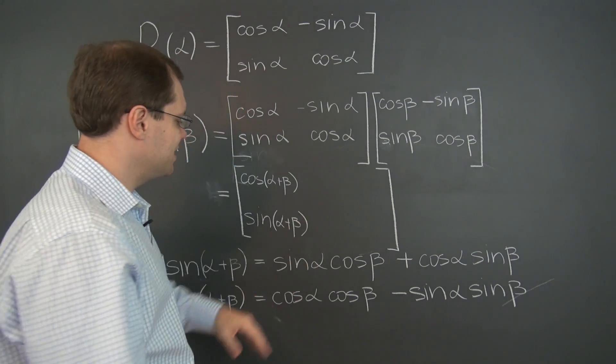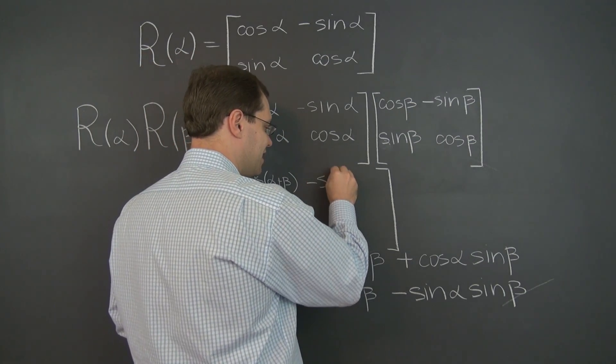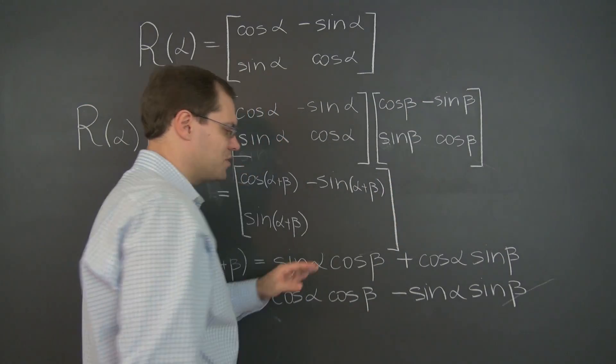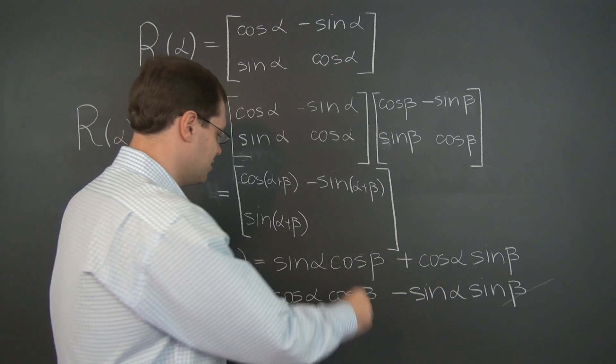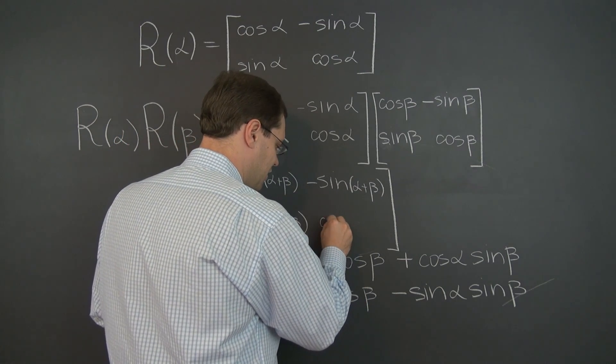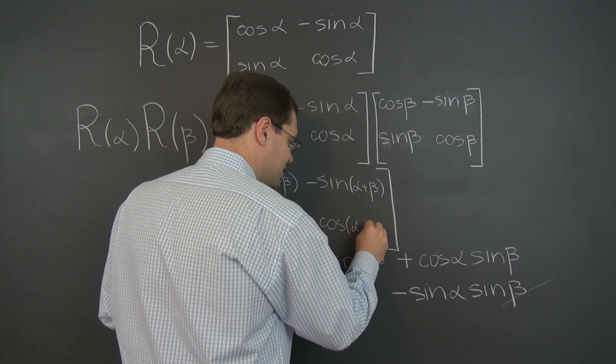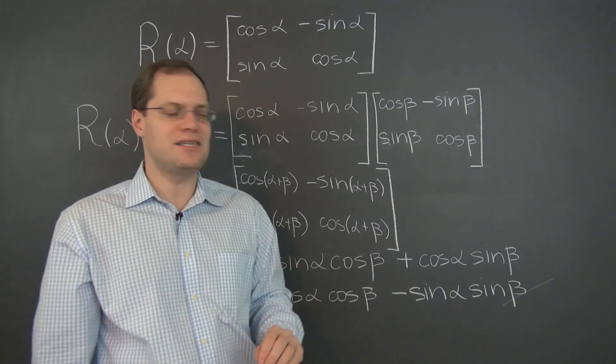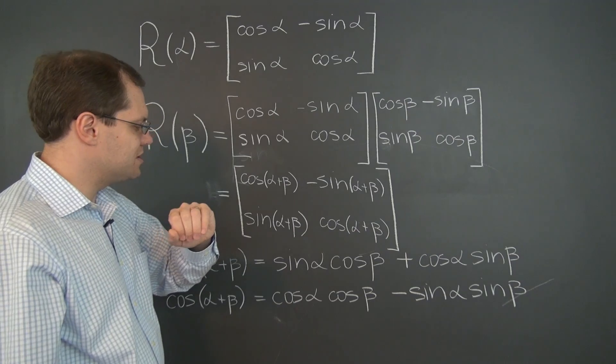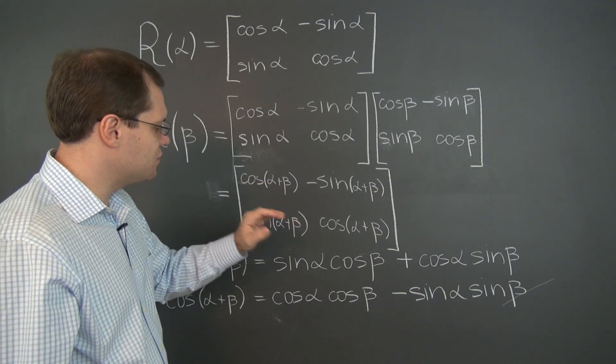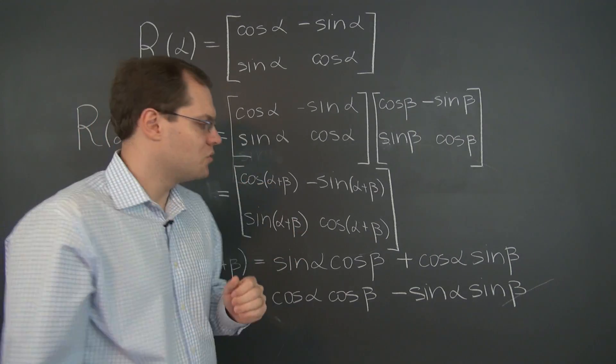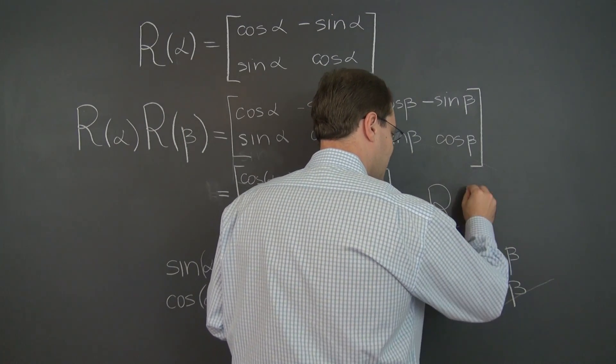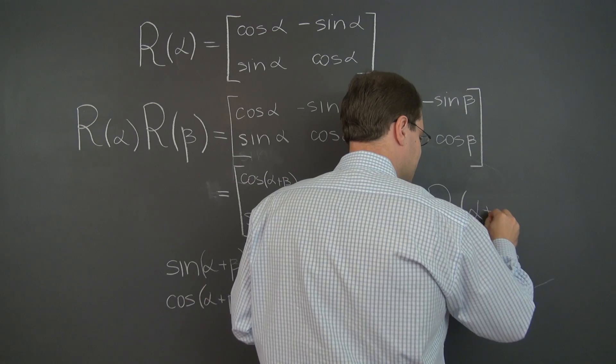What we're going to have here, of course, is negative sine of alpha plus beta. And what we're going to have in the last entry will be cosine of alpha plus beta. Isn't that fascinating? We basically use these formulas twice each. And here's what we discovered: that we get the trig functions of the sum, which of course can be written as R of alpha plus beta.